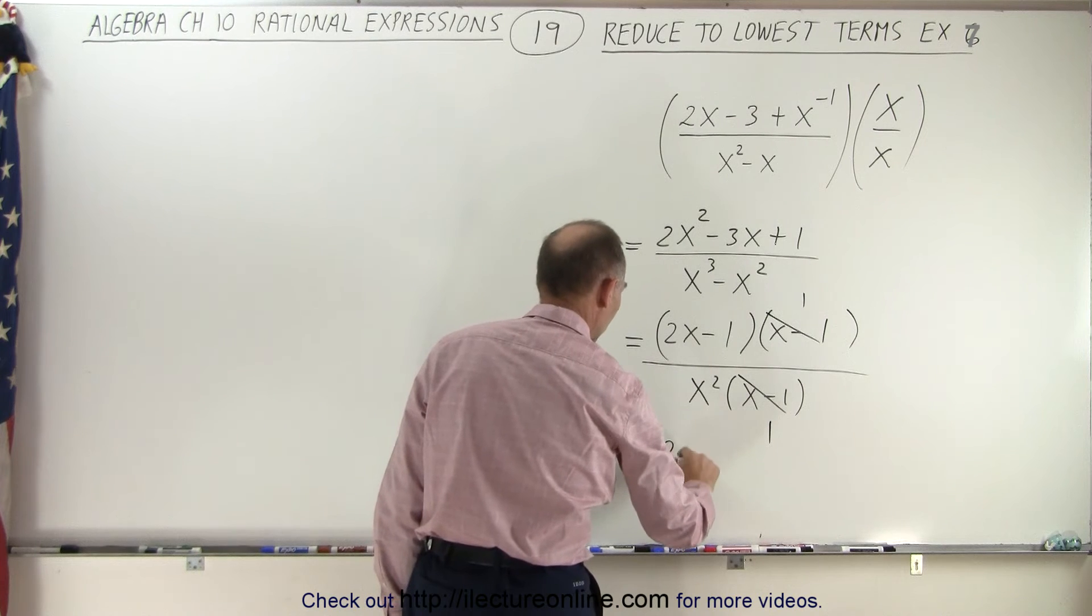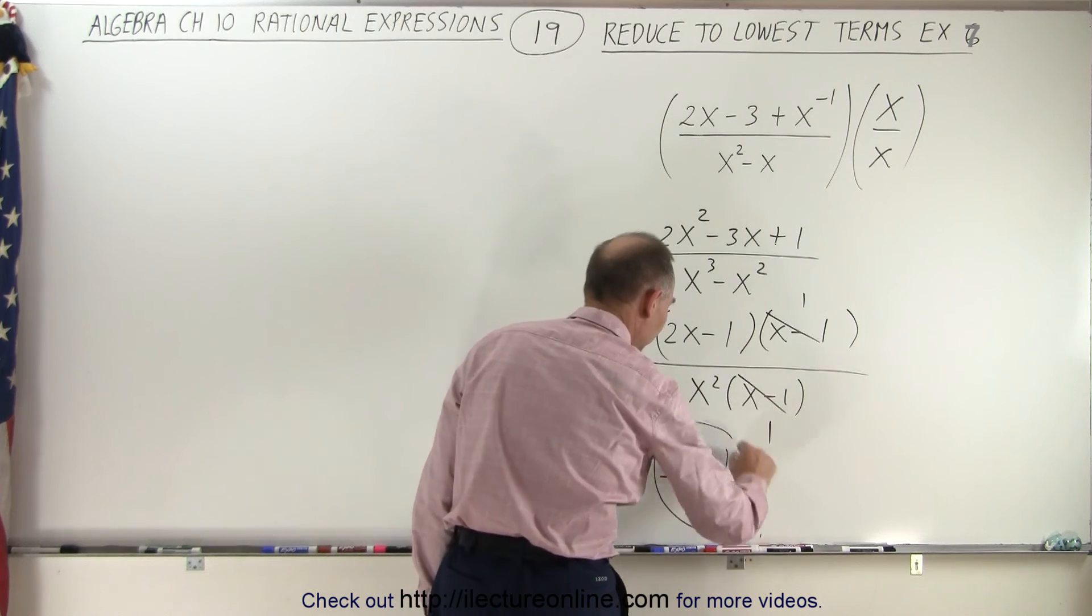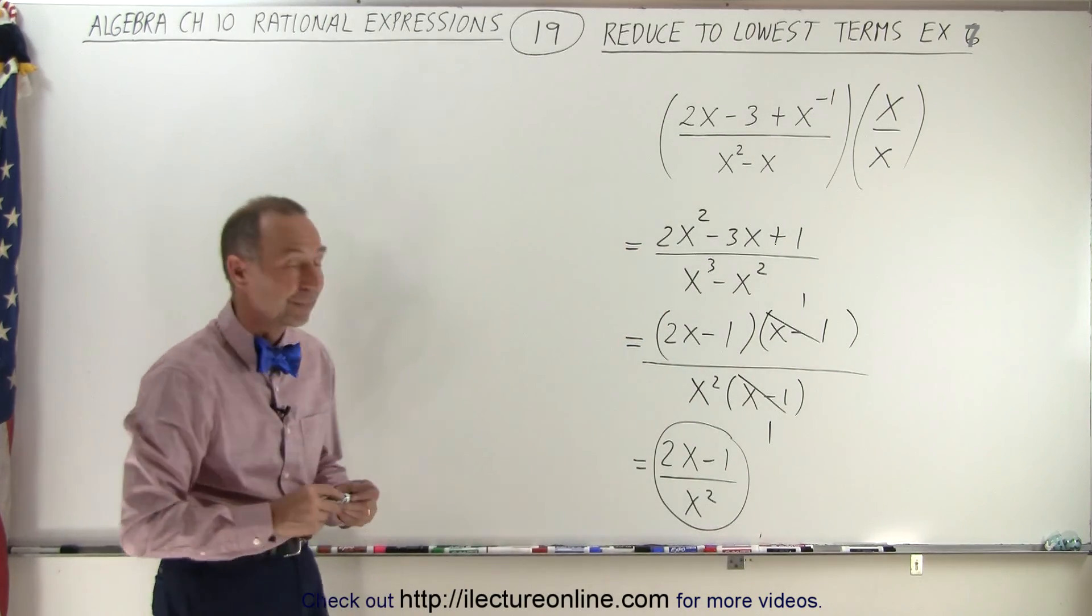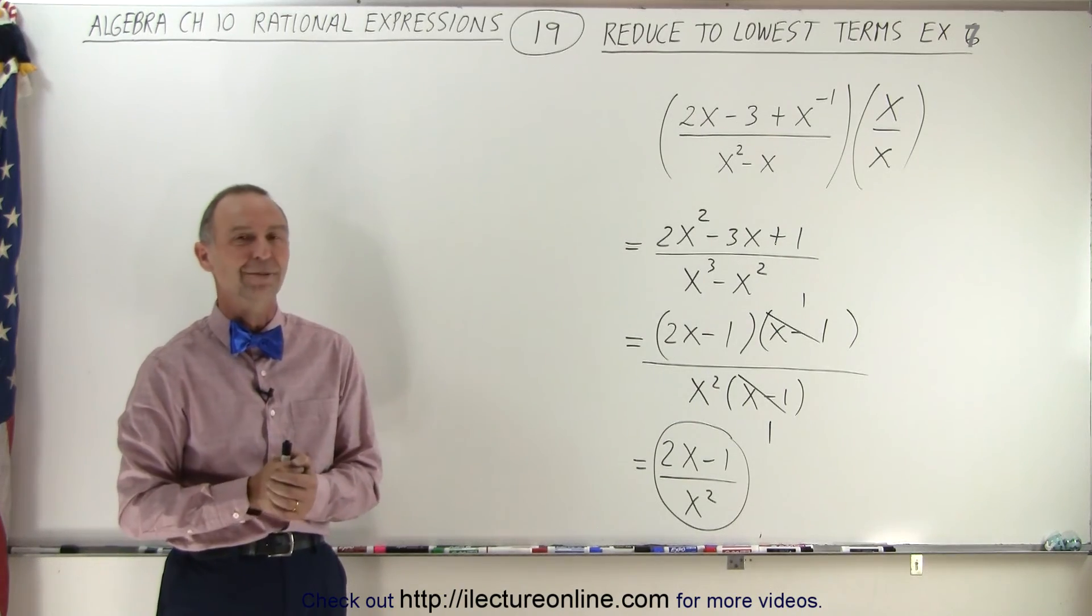So the answer then becomes 2x minus 1 divided by x squared as the most simplified form of that original problem. Again, the technique is to get rid of the negative exponents first, and that is how it's done.